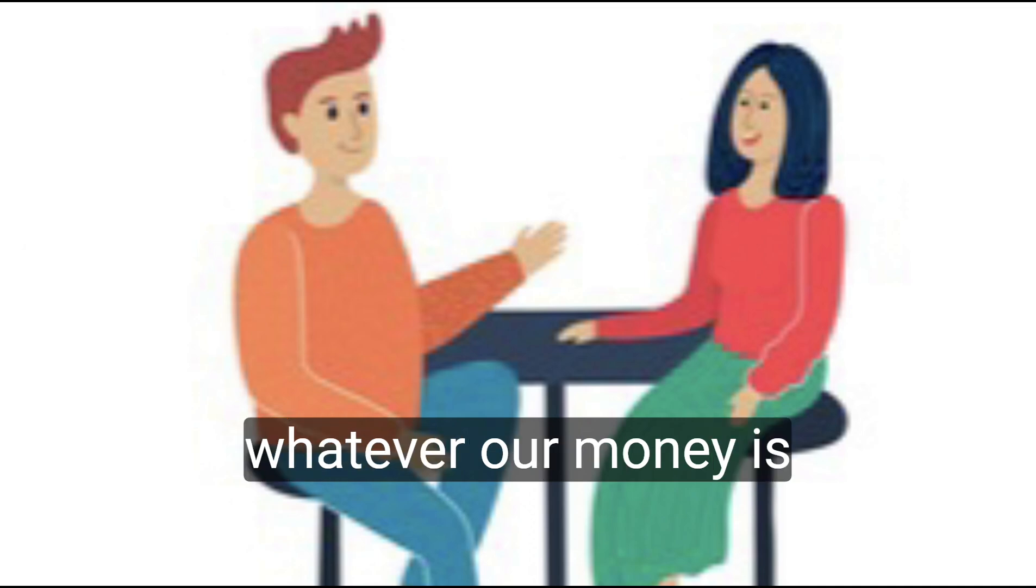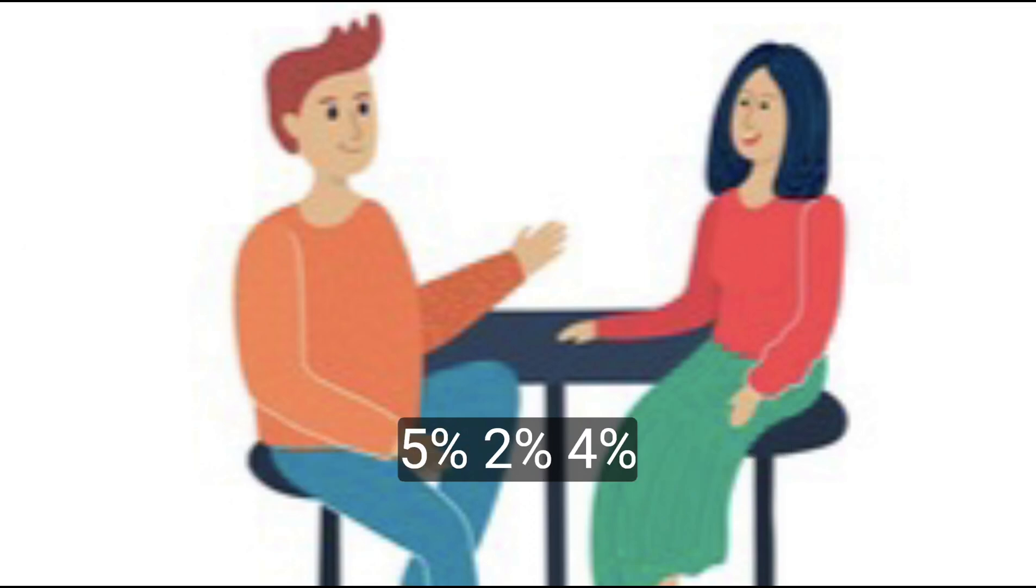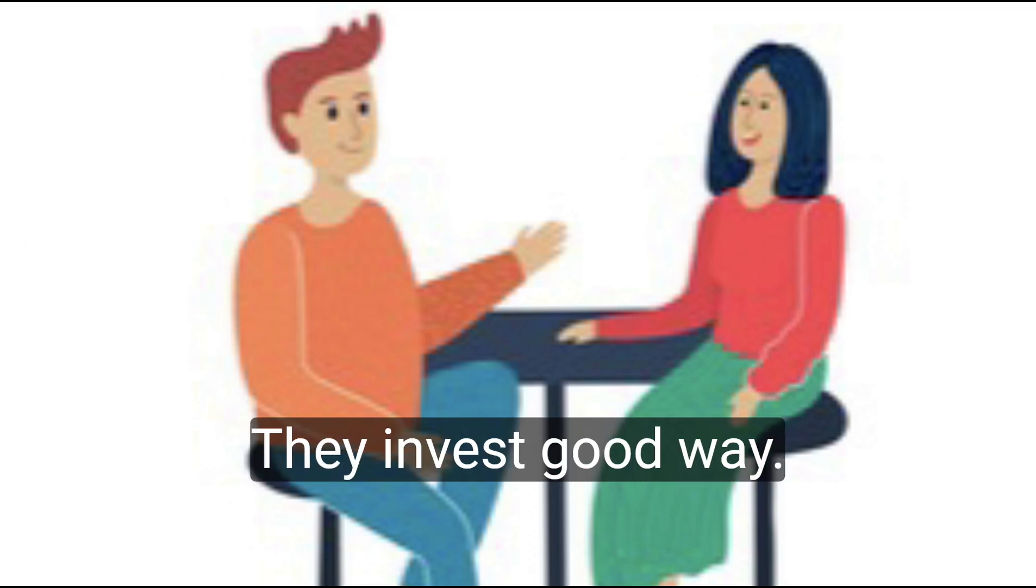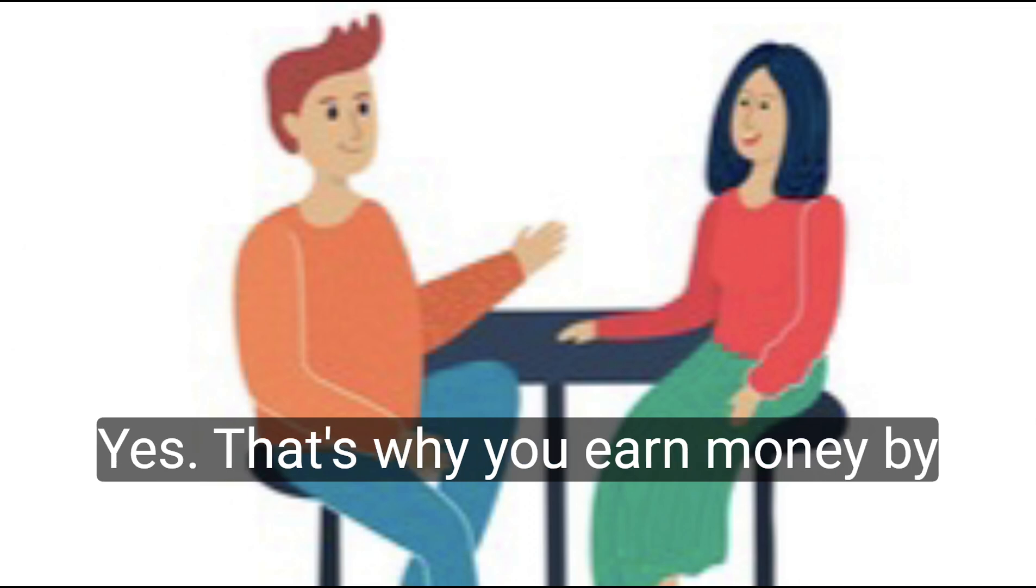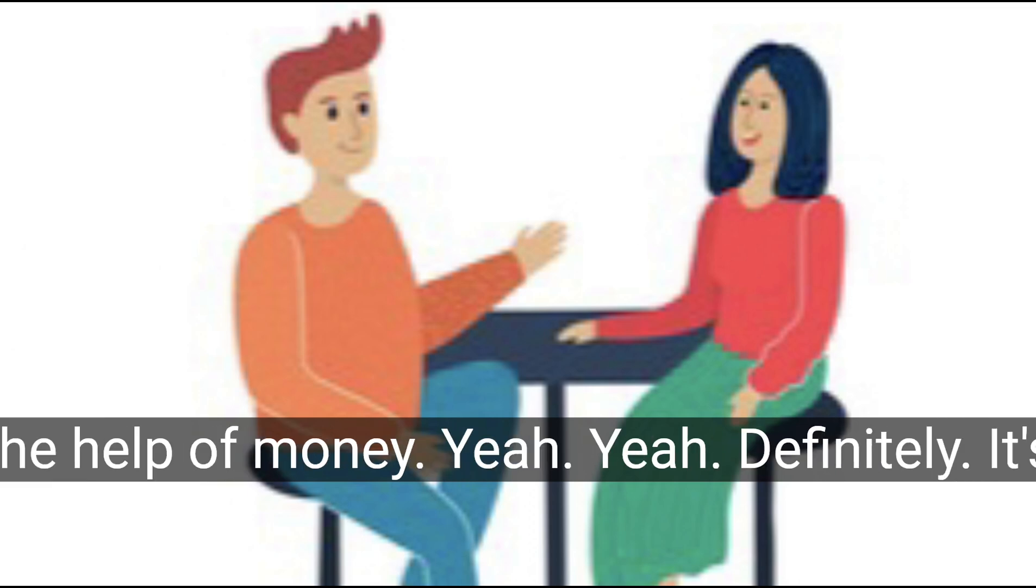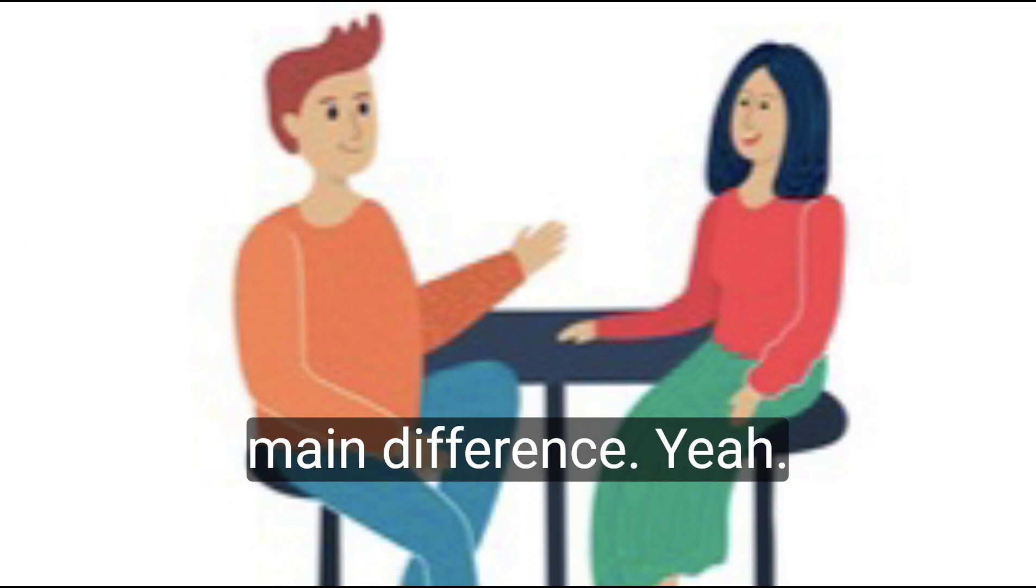But rich people, whatever they earn money - 5%, 2%, 4%, 10% - they invest in a good way. That's why they save also their money. That's why they earn money by the help of money. It's the main difference.